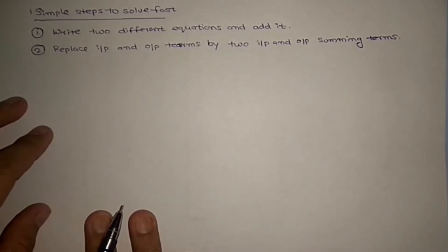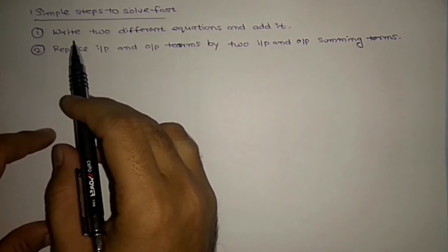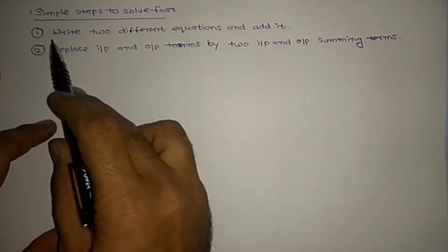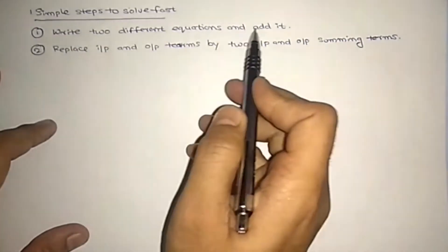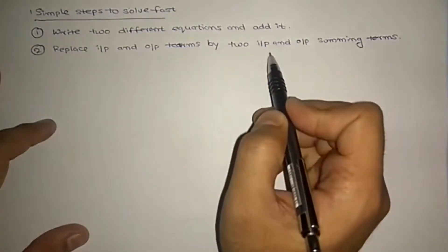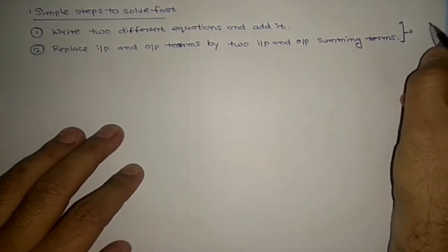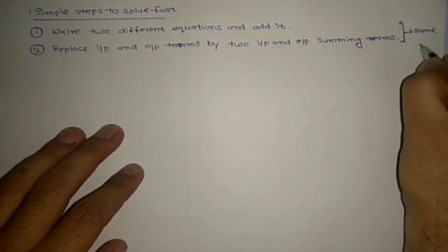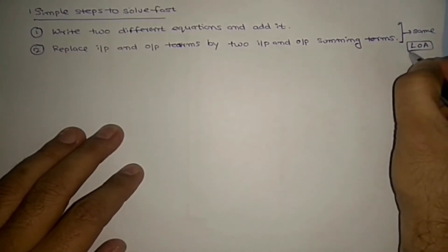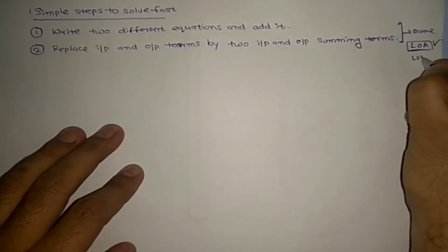This is a very important topic. In exams, it is very tough to follow all the steps, so here are simple steps to verify linearity. Step 1: write two different equations and add them. Step 2: replace the input X(t) by X1(t) + X2(t) and the output Y(t) by Y1(t) + Y2(t). If the two resulting equations are the same, the system satisfies the law of additivity. Most cases can be decided by law of additivity alone, though sometimes law of homogeneity is also required.